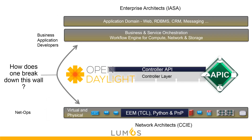And then at the top we have our enterprise architects, our IASA — another certification very important to designing and architecting how applications get written and developed. So our application domains: our web servers, our relational databases, CRM, CMDB or change management database. And slightly lower, we have our business application developers, our BDMs, our business and service orchestration, our cloud orchestration levels, our workflow engines for compute, network, and storage.